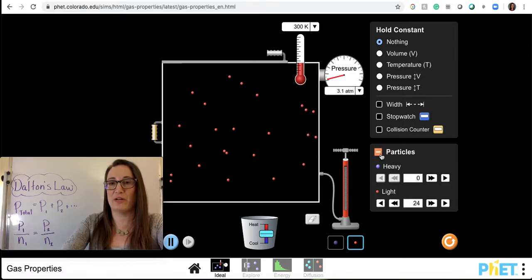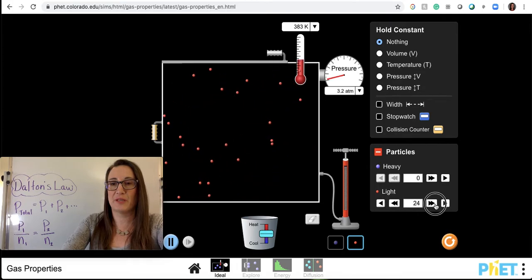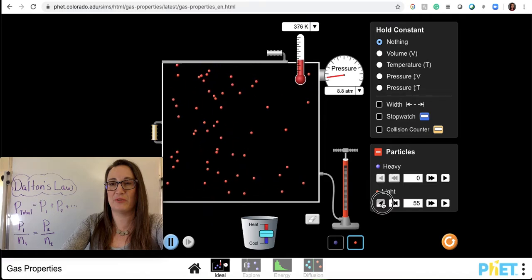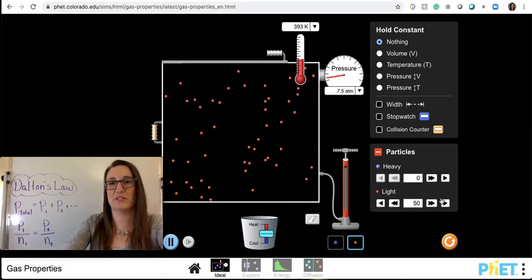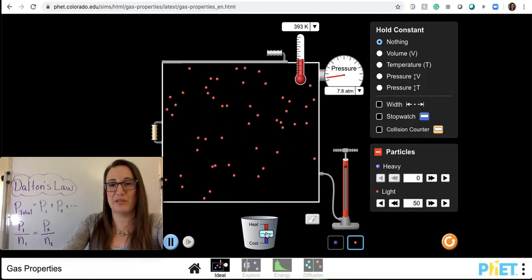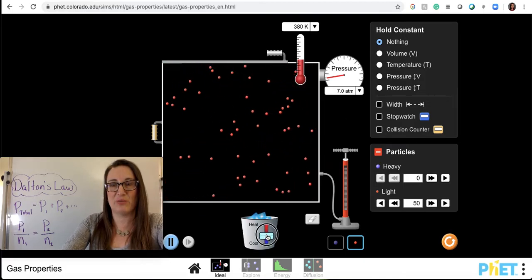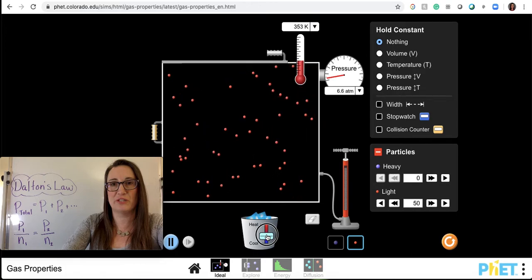I'm going to open up my particle counter because I want to have exactly 50. So because I can't get exactly 50 that way, I'm just going to go like that instead and have just one more to have exactly 50 particles. The other thing that I'm going to do is I want this to be at standard temperature. So I'm going to cool this down to 273 and then hold the temperature constant.